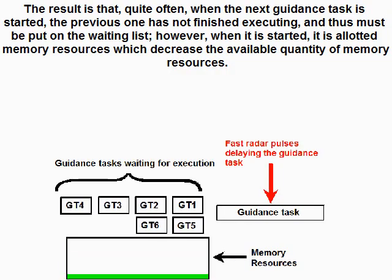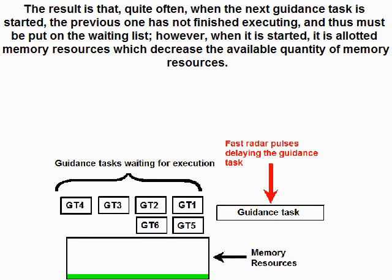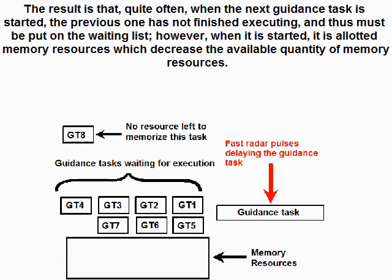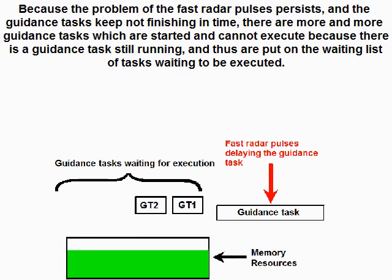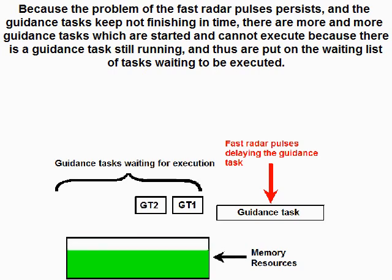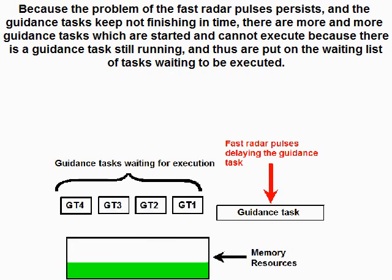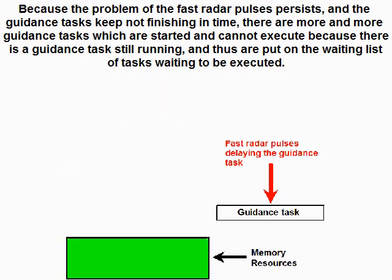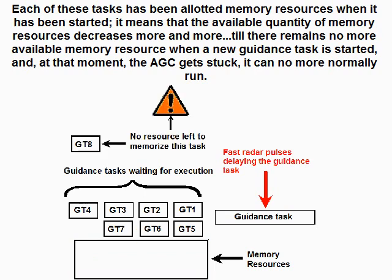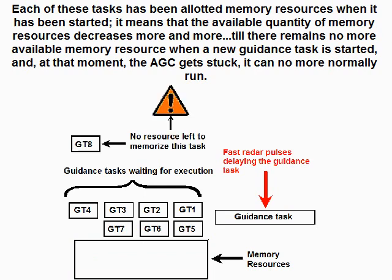The result is that quite often, when the next guidance task is started, the previous one has not finished executing and must be put on the waiting list. This consumes memory resources, decreasing the available quantity. Because the fast radar pulse problem persists and guidance tasks keep not finishing in time, more and more guidance tasks are queued and put on the waiting list. Each of these tasks has been allocated memory resources when started, meaning the available memory decreases more and more until there are no more available memory resources.